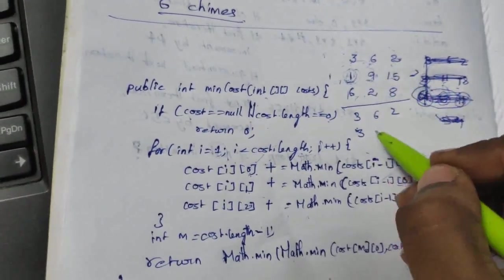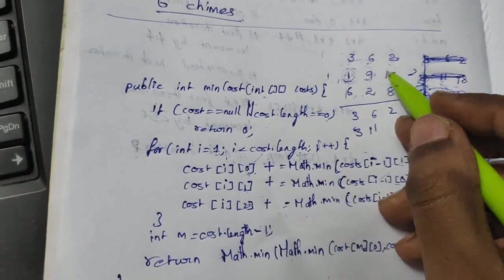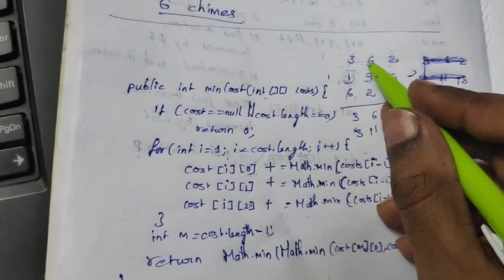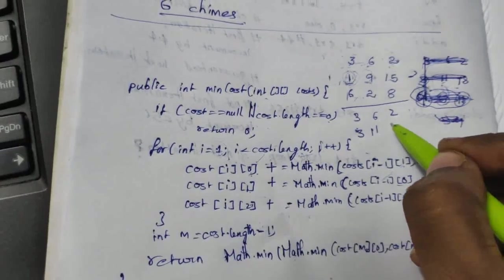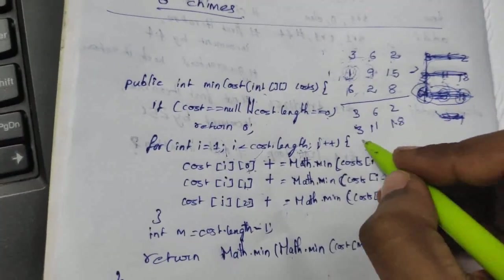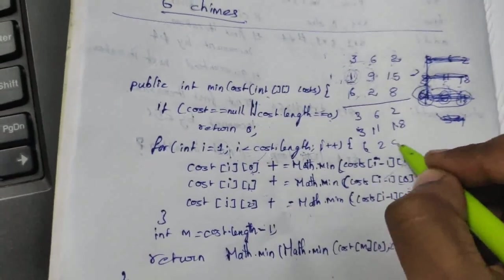2 is minimum, 9 plus 2 is 11. And then 15 plus minimum of 3 or 6. 3 is minimum, it is going to be 18. So last row remains as it is after the first iteration.